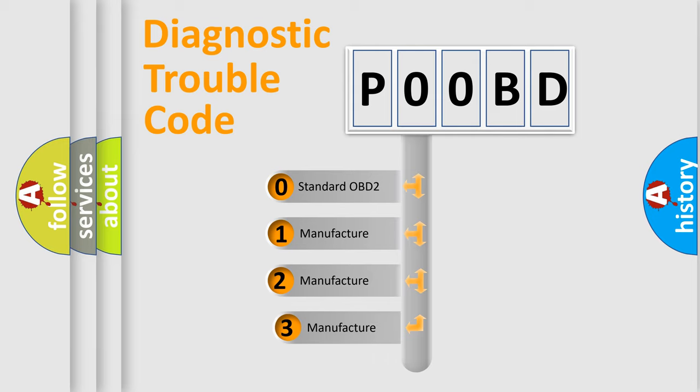If the second character is expressed as zero, it is a standardized error. In the case of numbers 1, 2, 3 it is a car-specific error.